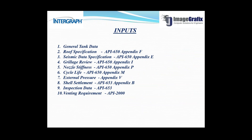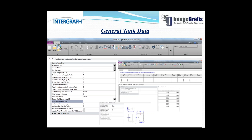In the software we need to have some inputs like general tank data, roof specification — which can be calculated as per API 650 Appendix F — then seismic data specification with API 650 Appendix E, annular plate review with API 650 Appendix I, nozzle stiffness with Appendix B, nozzle stiffness with Appendix P, cycle life with Appendix M, external pressure with Appendix V, shell settlement with Appendix B, inspection data as per API 650, and vent requirements per API 2000.